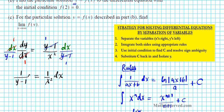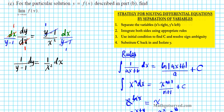Now we're done separating variables. Next we integrate both sides using the appropriate rules. The left side is easy to integrate using the rational expression rule. For the right side, we can rewrite 1 over X squared using the reciprocal property of exponents as X to the negative 2 dx, which allows us to apply the power rule easily.